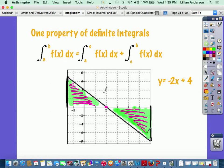So how would you actually write this? Well, if the function was y equals negative 2x plus 4, well, then it's simple.